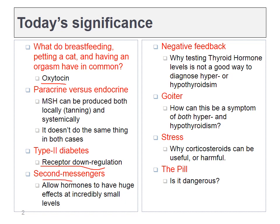We'll talk about second messenger systems today, which is something that hormones frequently use. We'll talk about a lot of negative feedback loops today, and when I say that, you should be thinking about the homeostatic regulation of hormone levels. We'll talk about why testing for thyroid hormone or testosterone levels is not the most useful metric. We'll talk about goiter, stress, and the pill, around which there's a lot of misinformation in the media.